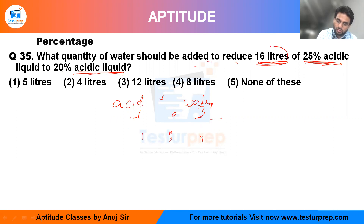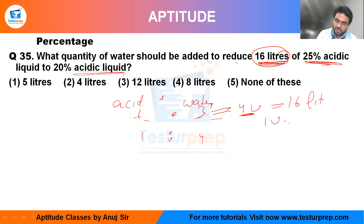Now, the total value is four units — three plus one, total is equal to four units. It is given to us as equal to 16 liters. So one unit comes out to be four.